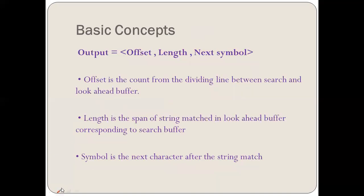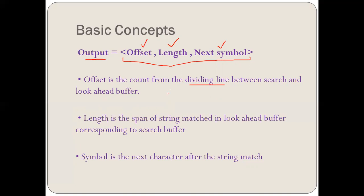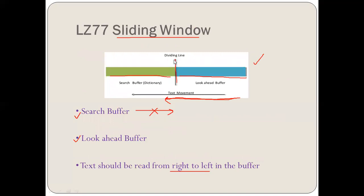How we are going to give an output when we encode: whenever we encode this dictionary-based LZ77, we get an output which works in three dimensions. First is the offset, second is the length, and third is the next symbol. Offset is the count from the dividing line between search and look-ahead buffer. We count the number of alphabets from the search buffer — that is called as offset.